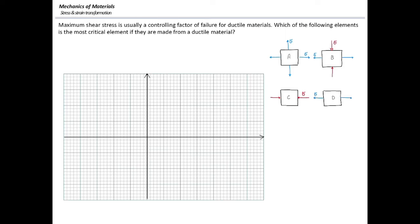The first question states: maximum shear stress is usually a controlling factor of failure for ductile materials. Which of the following elements is the most critical if made from a ductile material? We need to detect which of these four elements would experience the maximum shear stress. None of these elements currently have any shear stress on the plane shown, but shear stresses develop when we rotate the element.